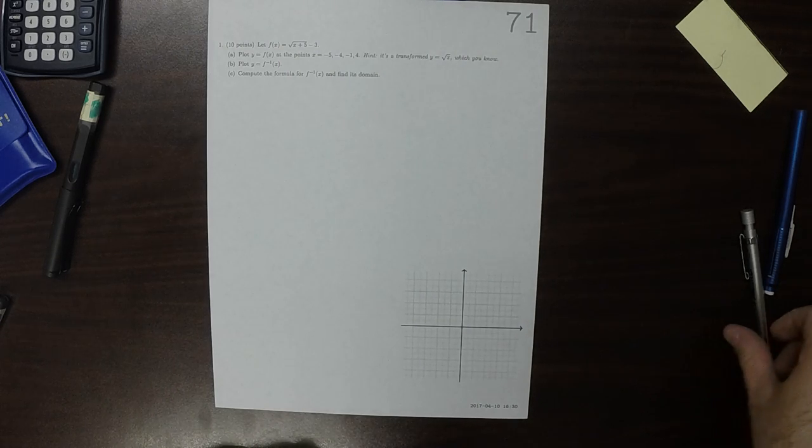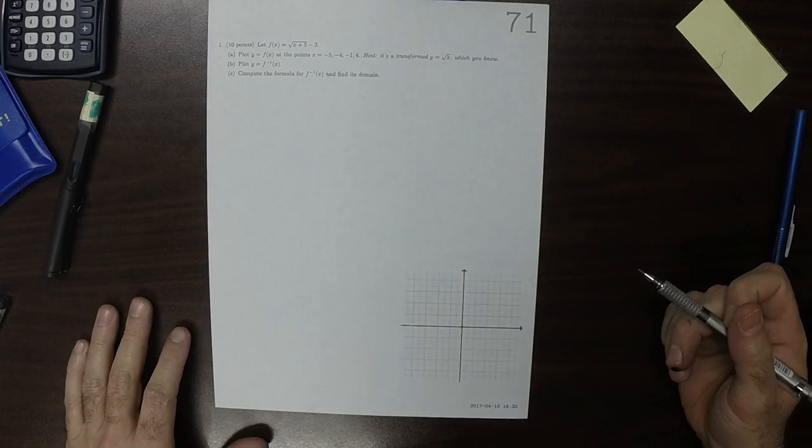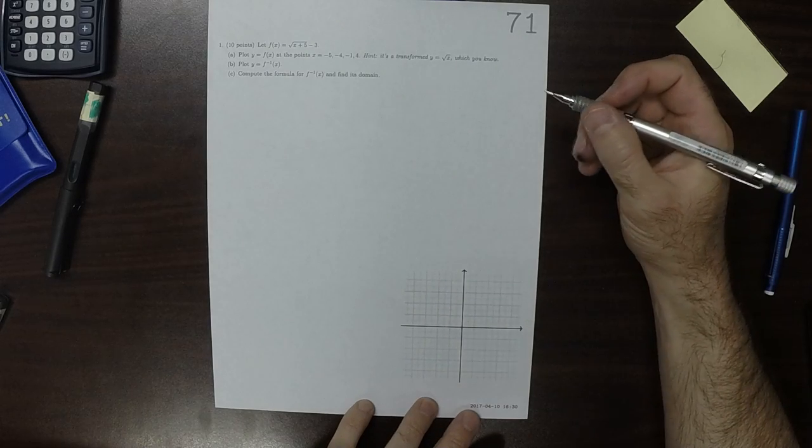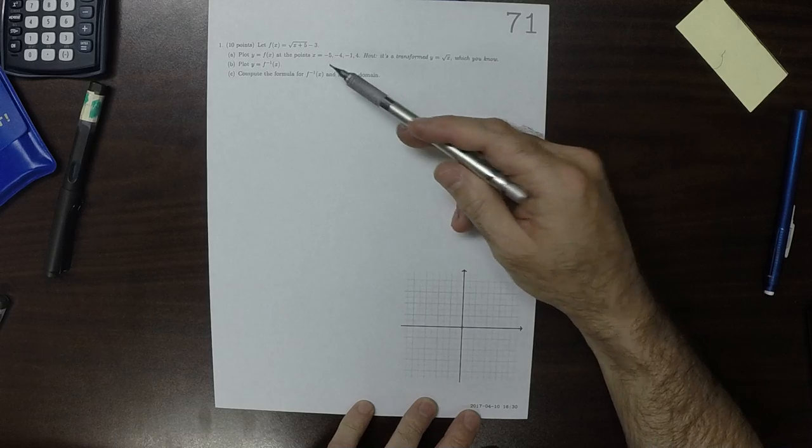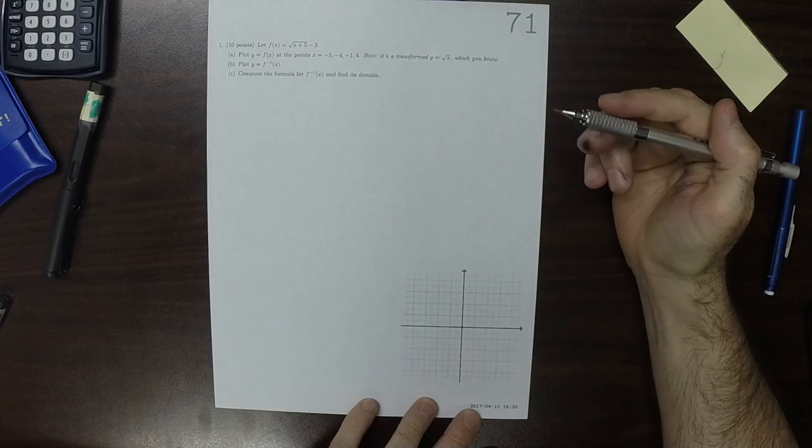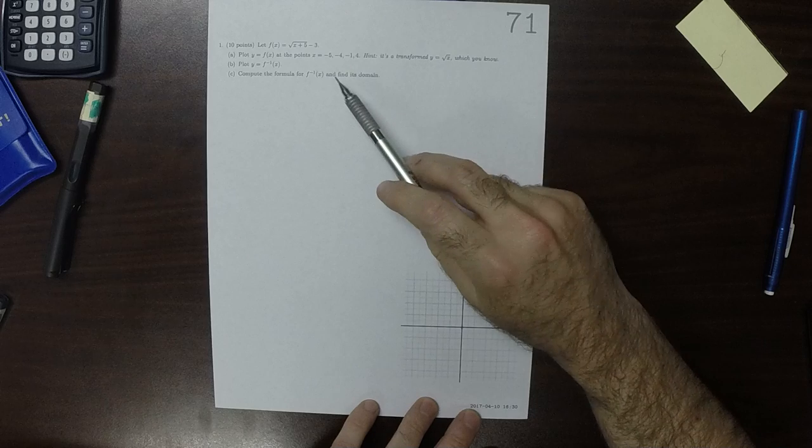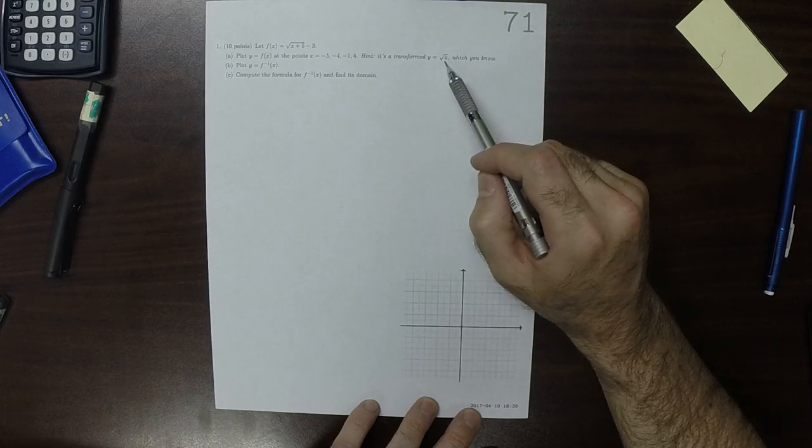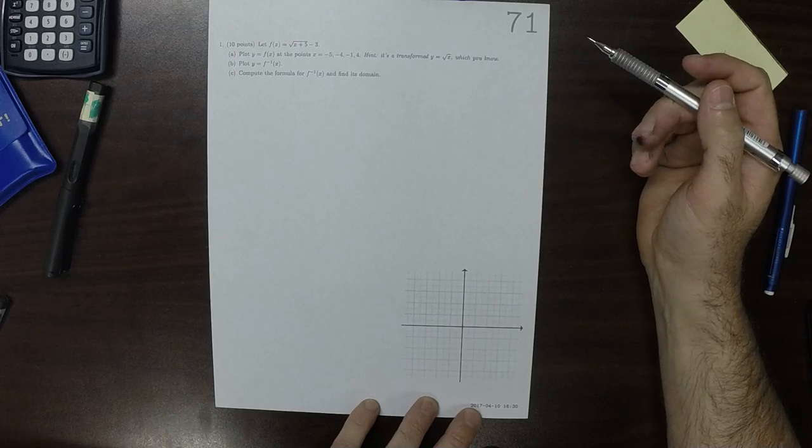This is the solution to written homework 71. We're given this function. Plot this function at those points. And hint, it's a transformed version of the square root function.